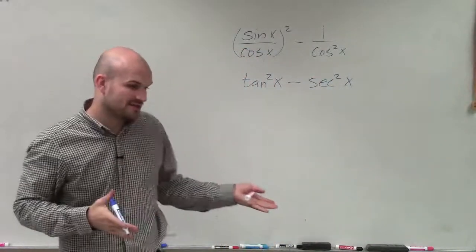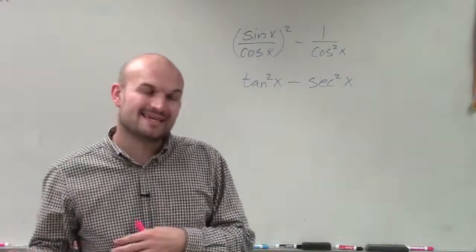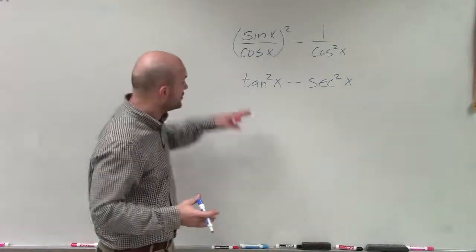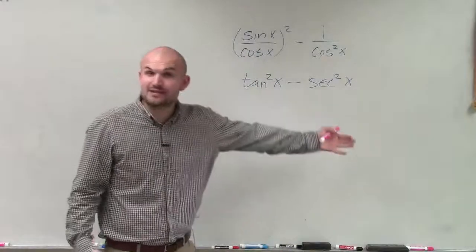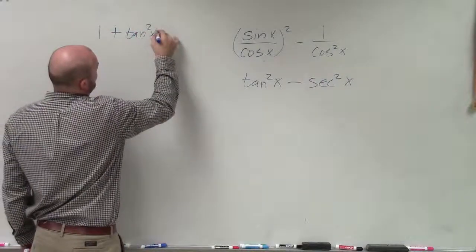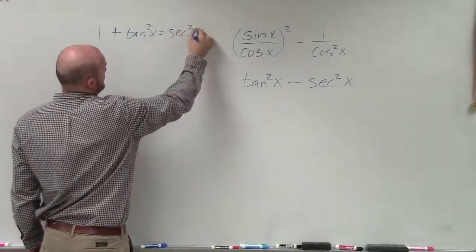So now I go and look at these and I say, all right, what can I do with tangent squared of x minus secant of x? Well, I know that by looking at the Pythagorean identities, tangent and secant are related to each other, where I have 1 plus tangent squared of x equals secant squared of x.